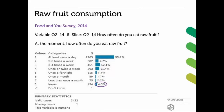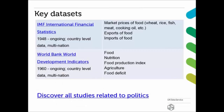We don't only have UK data — we also hold international datasets about food. An example is the IMF International Financial Statistics. This is a different type of food data — more than dietary habits, it covers market prices of food such as wheat, rice, fish, meat, and cooking oil, and it has data about exports and imports of food for different countries. It's country-level aggregated data.